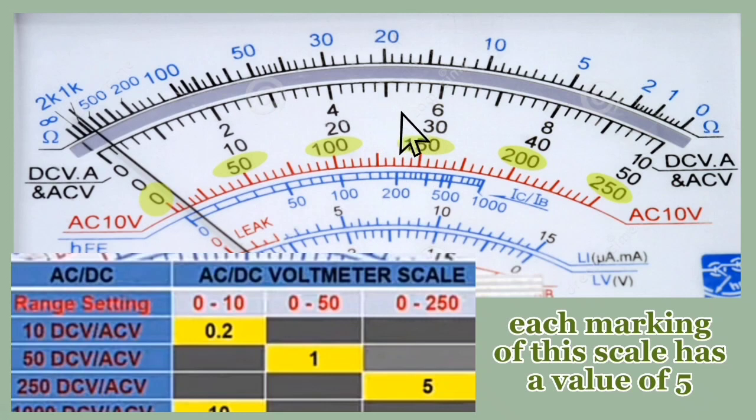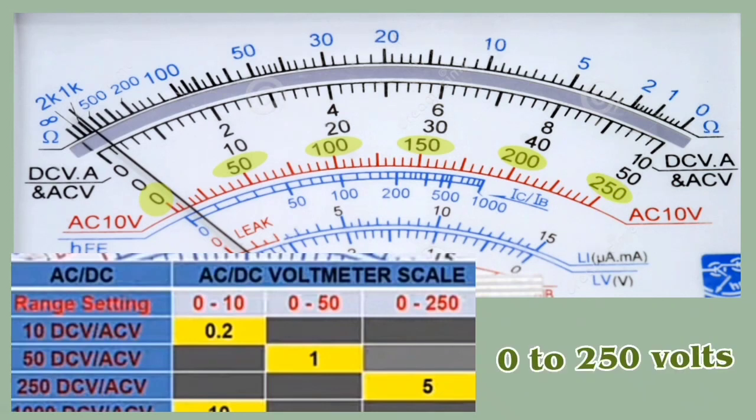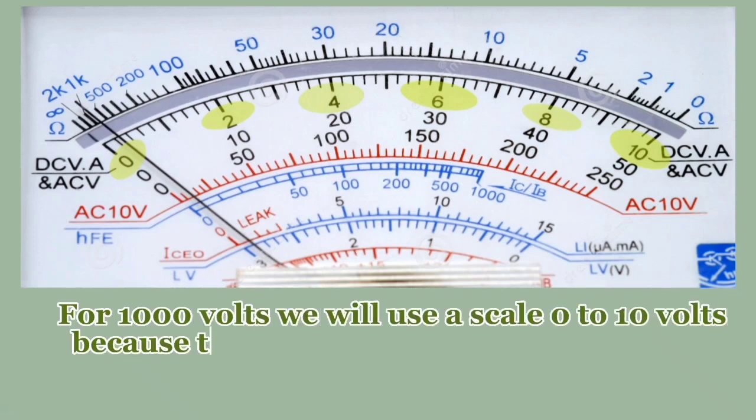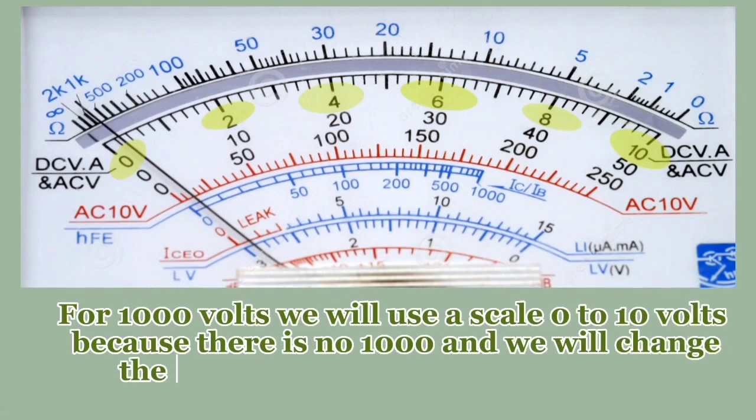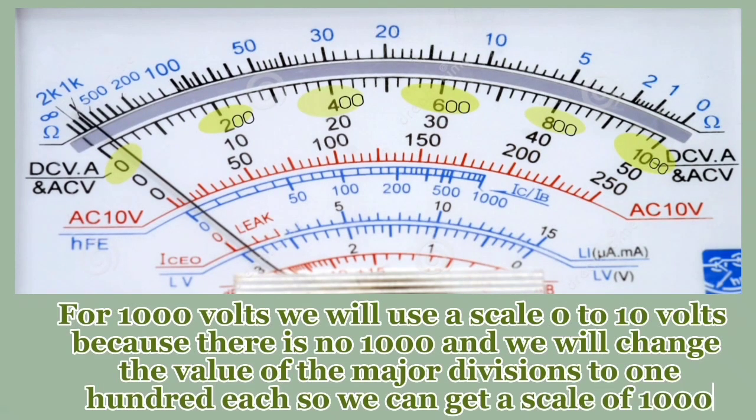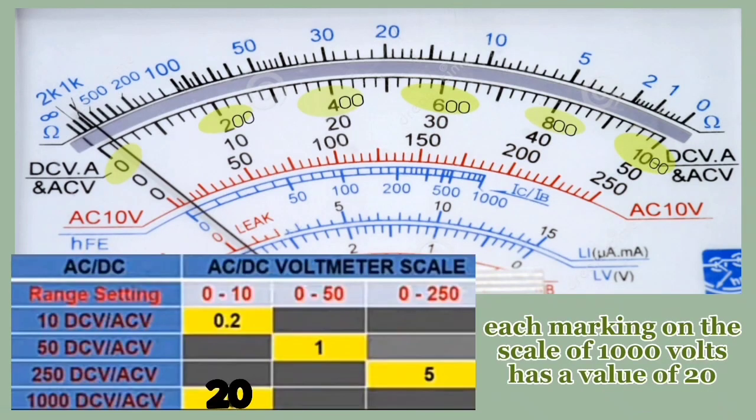Now let's proceed to the last one, which is 1000 volts. For 1000 volts, we will use the scale 0 to 10 volts because there is no 1000, and we will change the value of the major divisions to 100 each so we can get a scale of 1000. Each marking on the scale of 1000 volts has a value of 20: 0, 20, 40, 60, 80, 100, and so on until it reaches 1000 volts.